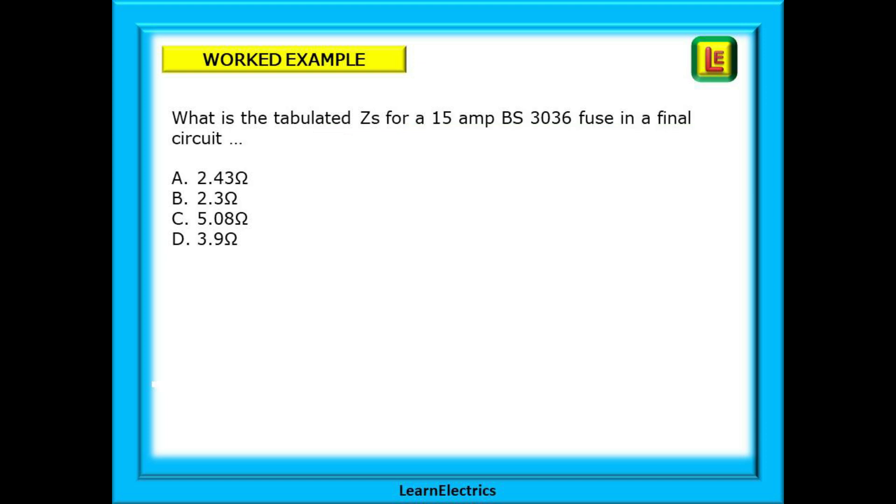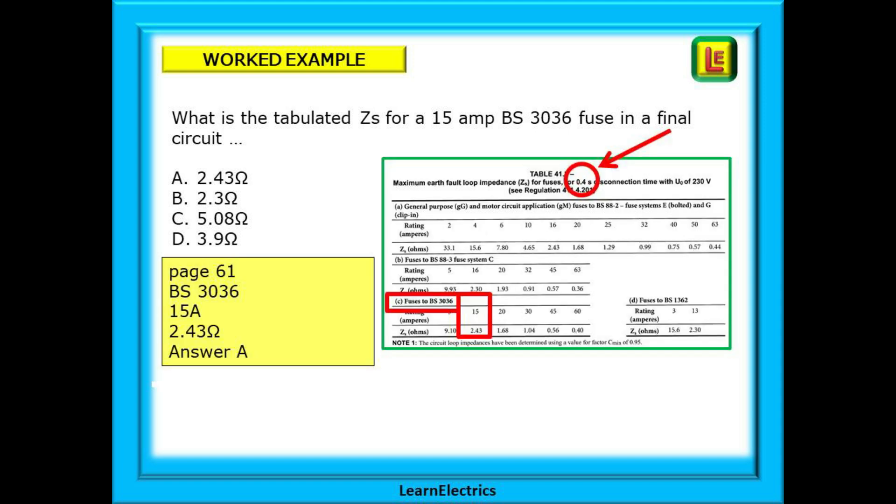Now try this one. What is the tabulated ZS for a 15 amp BS 3036 fuse in a final circuit? Fuses again but a final circuit this time and that means 0.4 seconds. We need page 61 table 41.2. Find BS 3036 fuses. Find 15 amps and there is our answer 2.43 ohms. Choose answer A.